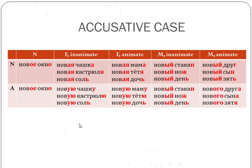Another thing students ask about is words ending in a soft sign — I added a third line everywhere. We get soft sign words with both feminine and masculine nouns. For feminine nouns the same rule applies: И→У and everything else stays the same, including the soft sign — Новая соль → Новую соль; Новая дочь → Новую дочь. For masculine inanimate nouns: Новый день → Новый день — everything else stays the same. But for masculine animate nouns, see what happens: ЗЯТЬ (son-in-law) — Новый зять → Нового зятя — both endings coming from the genitive case.